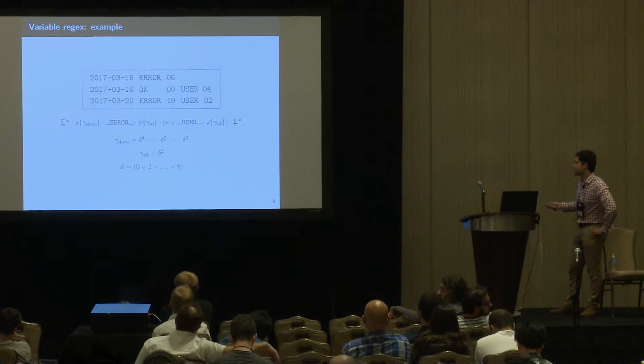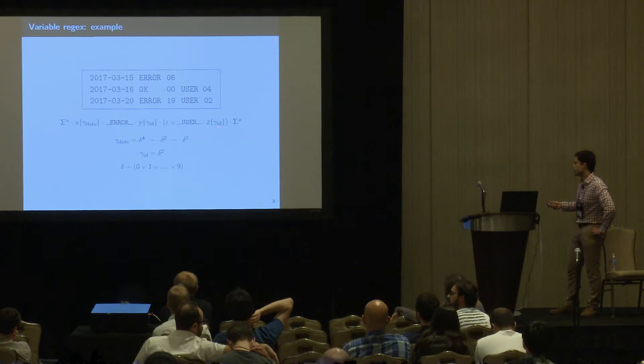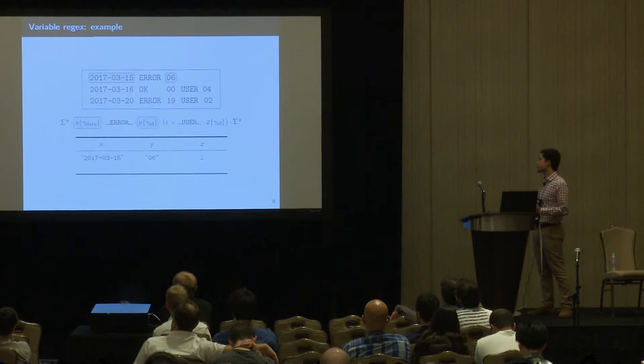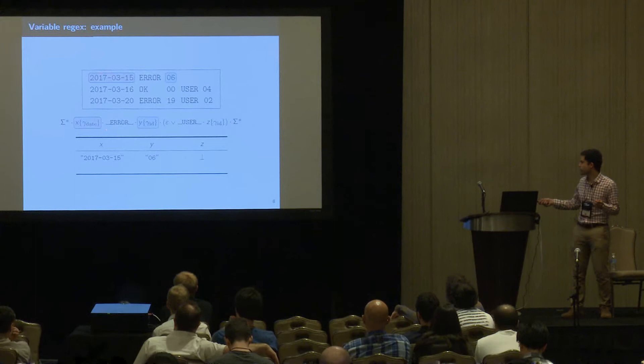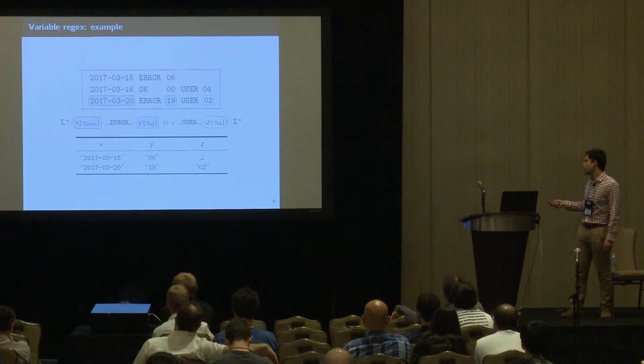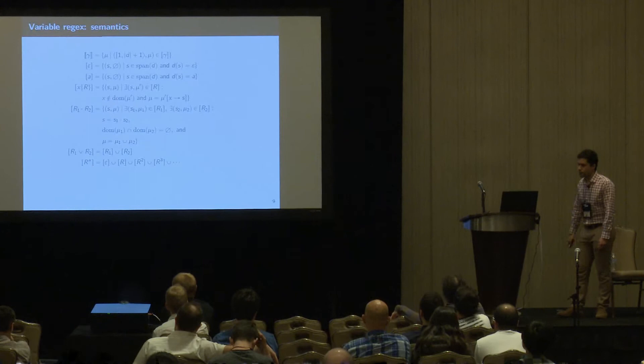Here is an example: we have a document with an expression capturing the date in variable x, an error ID in variable y, and, if present, a user ID in variable z. Evaluating this gives us a mapping from the first line where we capture the date and error ID, but with no user ID — so that is unassigned. Then we capture another mapping where we have all three things.